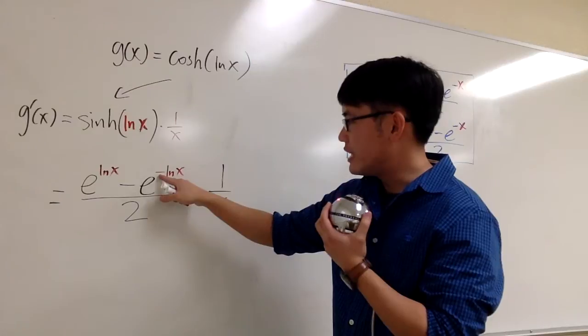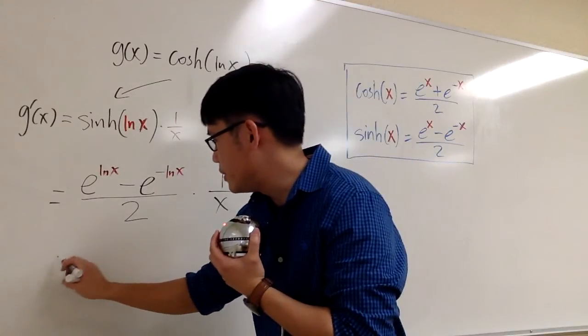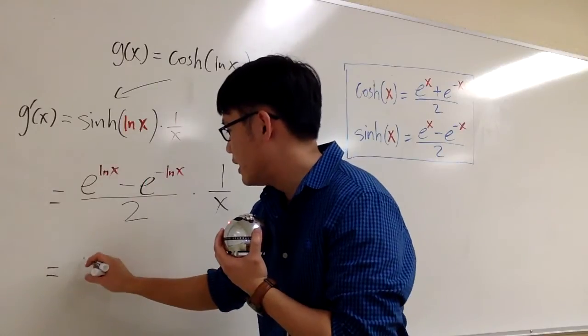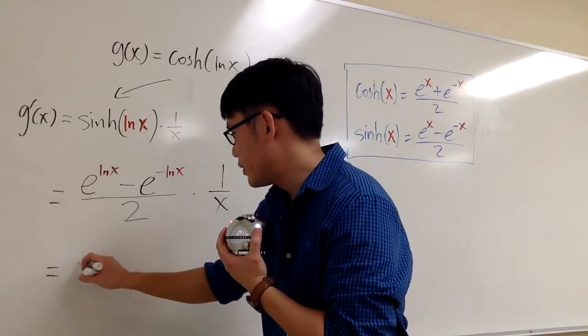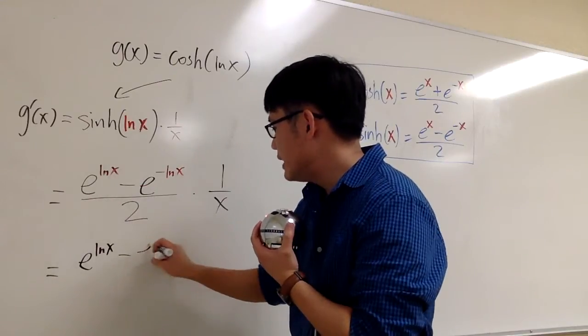So we must take the negative onto the exponent. So this is going to look like this. Let me just write it down for you guys.